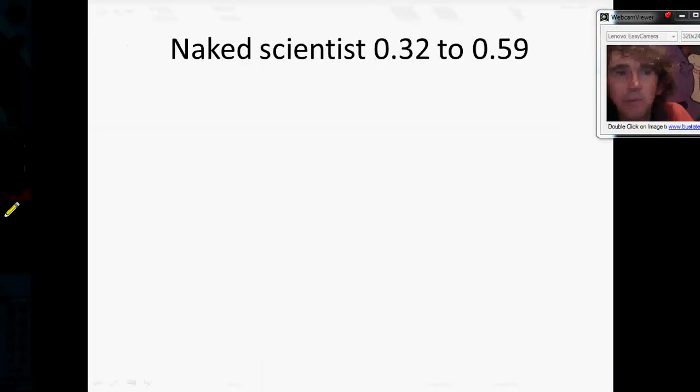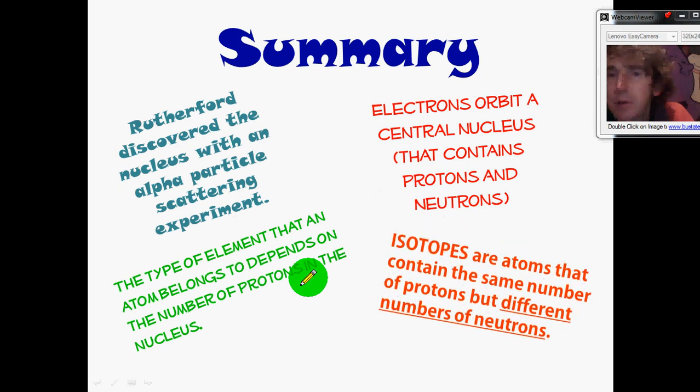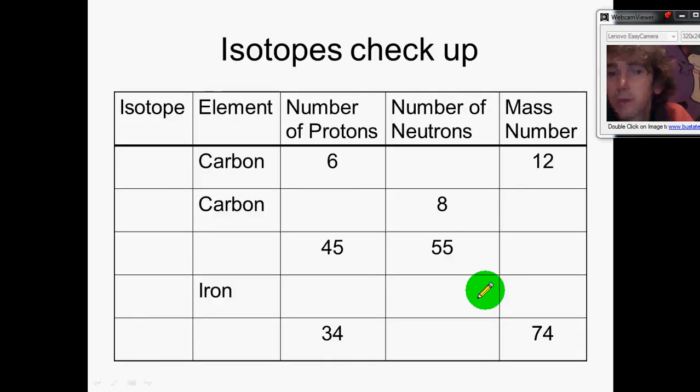So, isotopes are atoms of the same element that contain different numbers of neutrons, always the same number of protons. We're going to leave this table here, pause it later on, copy out the table and have a go. See if you can work out what these other isotopes might be. You're going to need to use a periodic table.